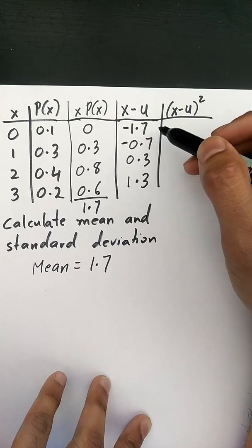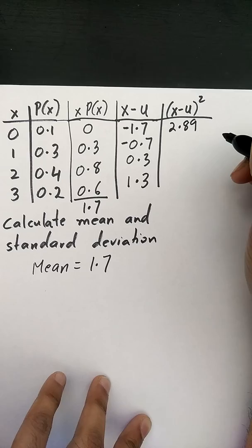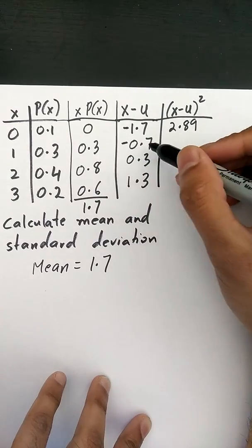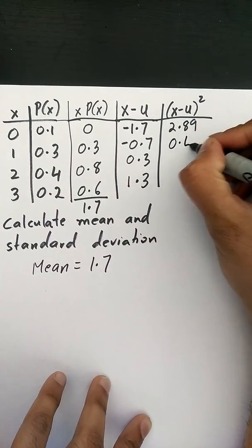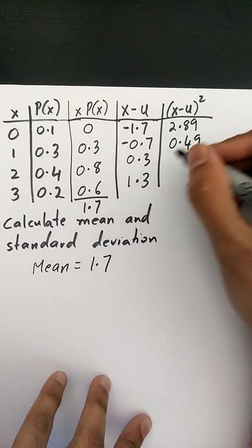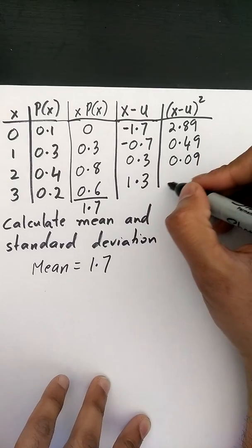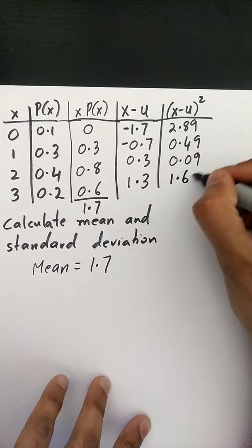So negative 1.7 squared is going to be 2.89. Negative 0.7 squared is 0.49, so these will always be positive values in this column. 0.3 squared is 0.09 and 1.3 squared is 1.69.